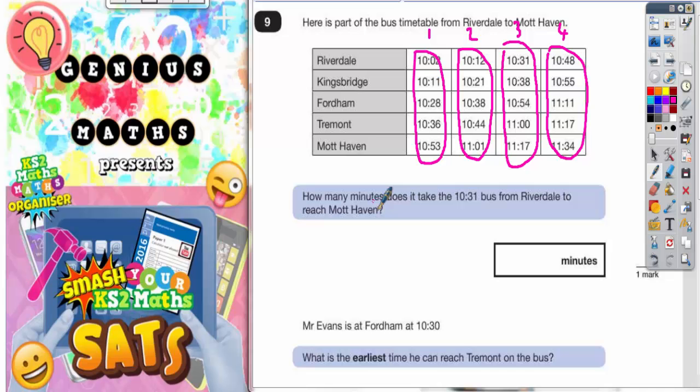So how many minutes does it take the 10:31 bus from Riverdale to reach Mott Haven? Now you need to decide which of the 4 buses you're on. Well the 10:31 bus sends you straight away to bus number 3. So we should be looking at this column, the 10:31 bus.